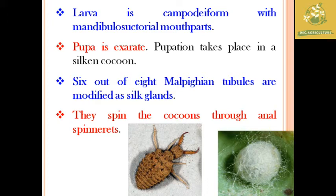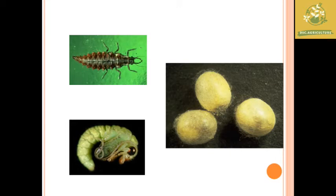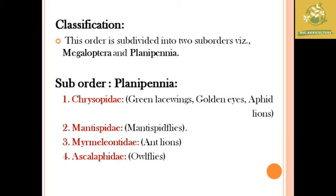There are sub-orders within Neuroptera. The first sub-orders are Megaloptera and Planipennia; the second is Neuroptera. Megaloptera is not covered in this course. The four families covered are Chrysopidae, Mantispidae, Myrmeleontidae, and Ascalaphidae.